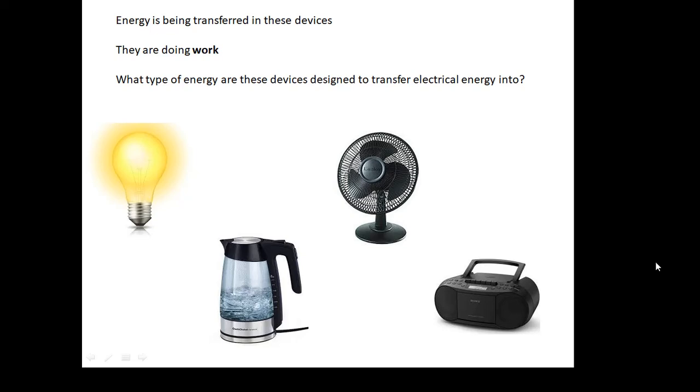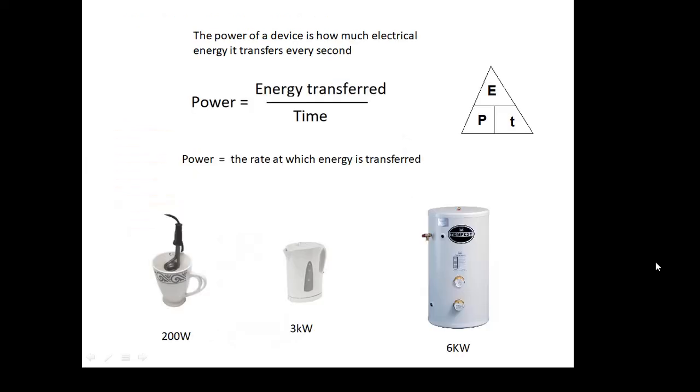The power of a device is how much energy it transfers every second. So power is energy transferred divided by time. We could measure power in joules per second because it's the number of joules transferred every second, but it has its own units: watts (capital W).